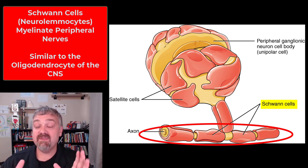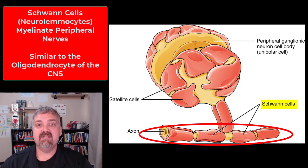Those are your six neuroglial cells — four of the central nervous system and two of the peripheral nervous system. Very important that you know these. Watch this again, take some notes, do whatever you need to do. I hope this helps. Have a wonderful day. Be blessed.